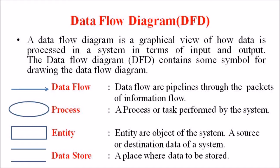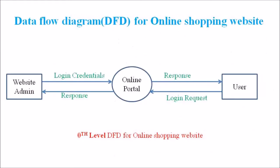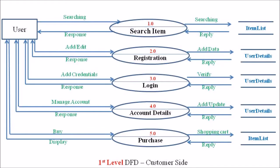In each and every DFD we can see these four representations: data flow with an arrow, processes with an ellipse, entities with a rectangle, and data stores with two parallel lines. In the last lecture we had discussed the zeroth level as well as the first level DFD of the customer side. The first level DFD of the customer side has five independent processes.